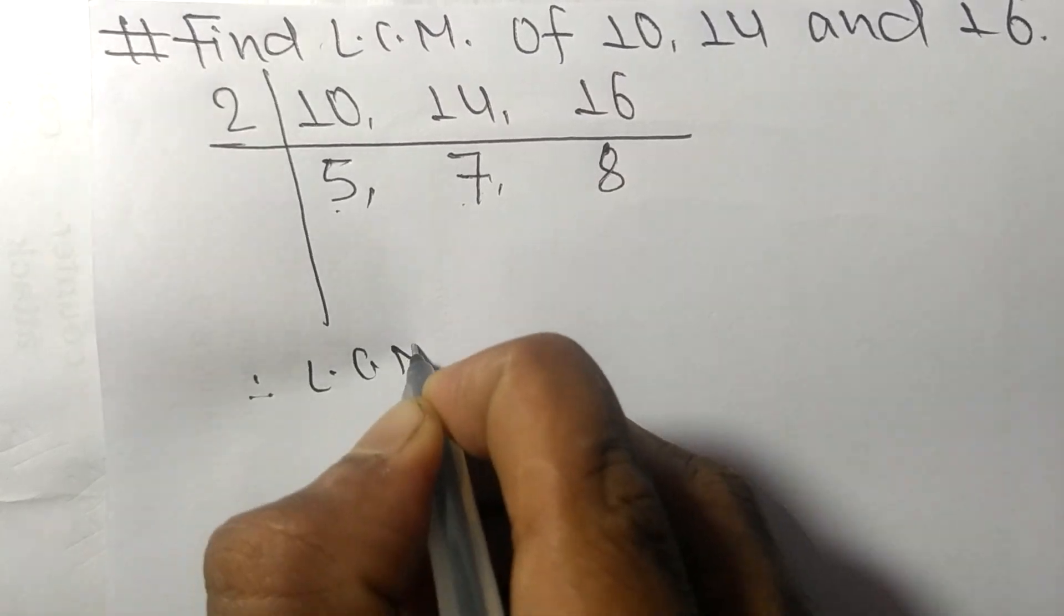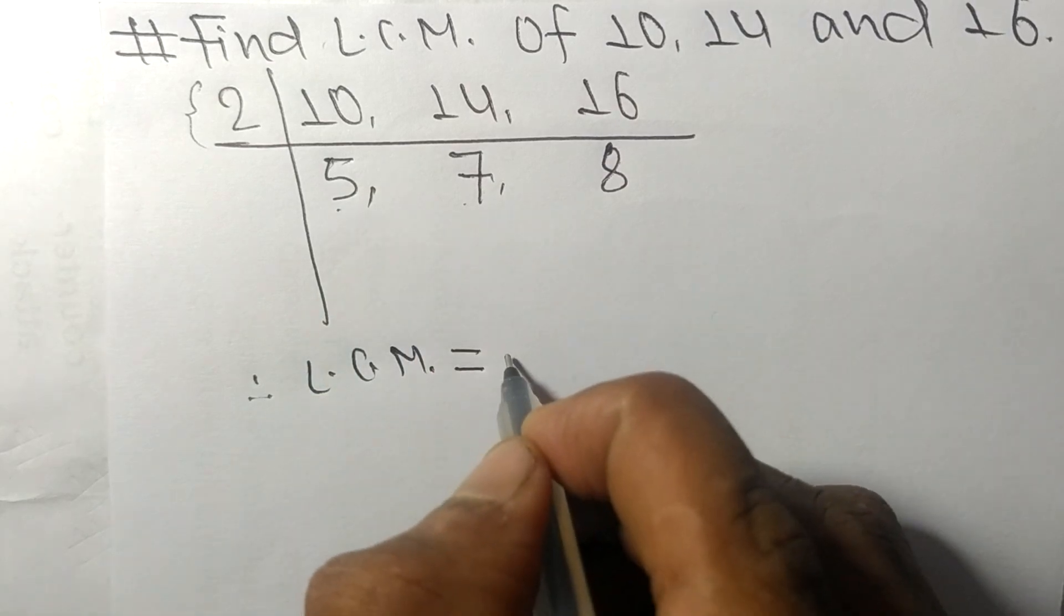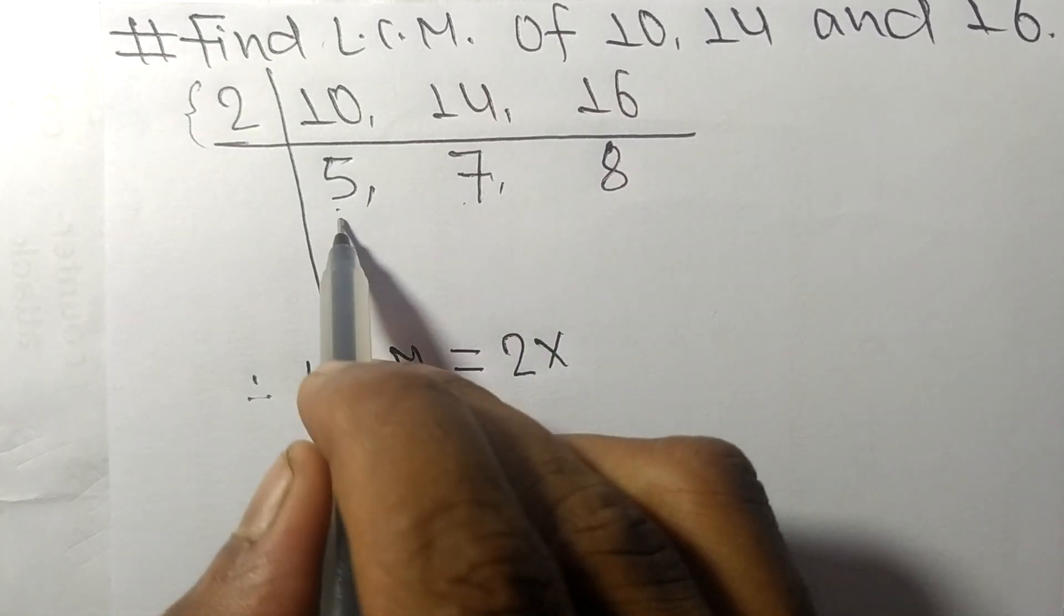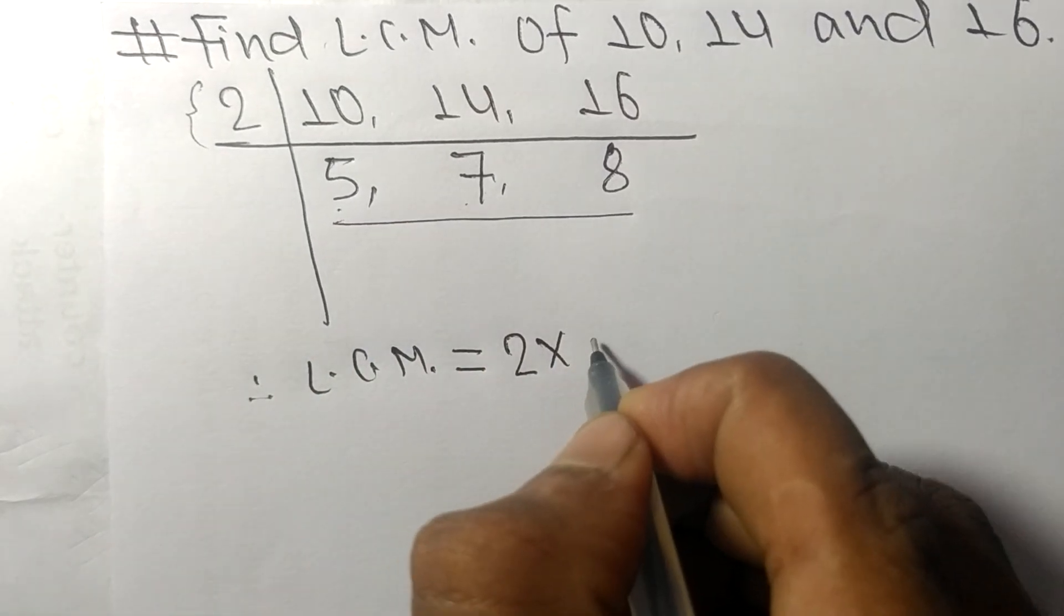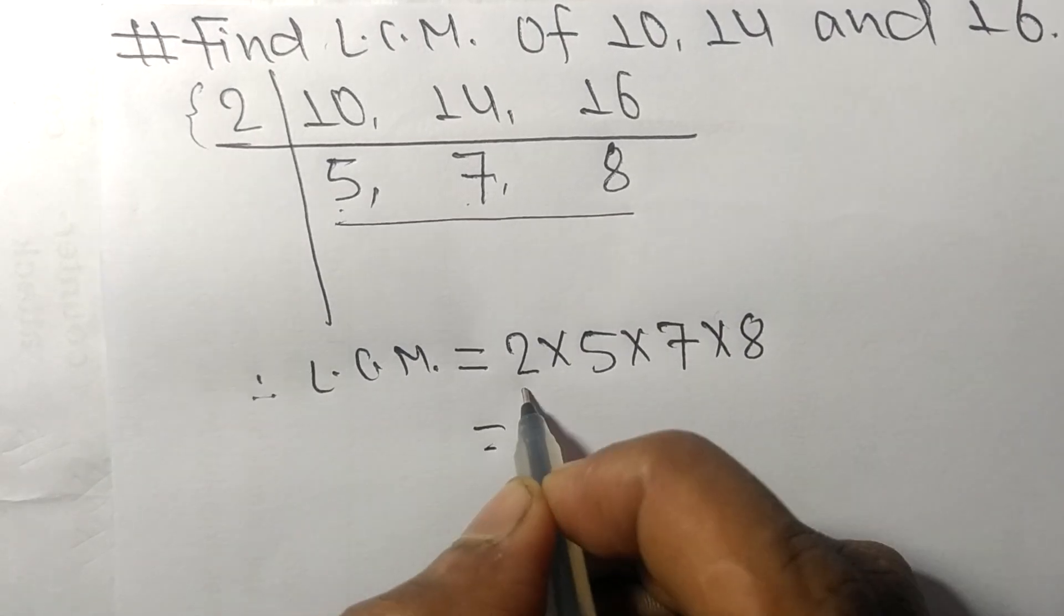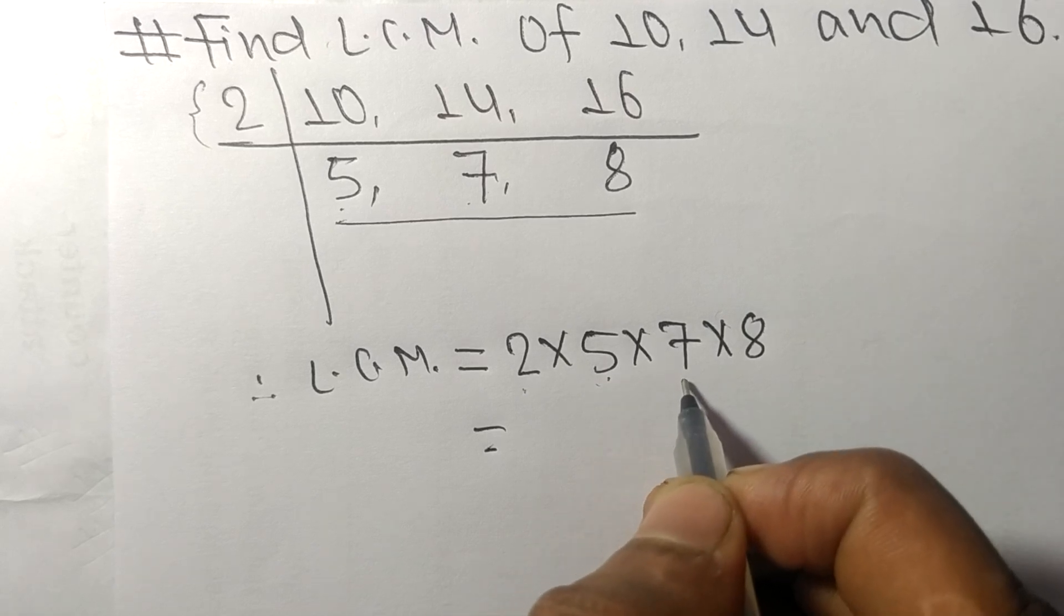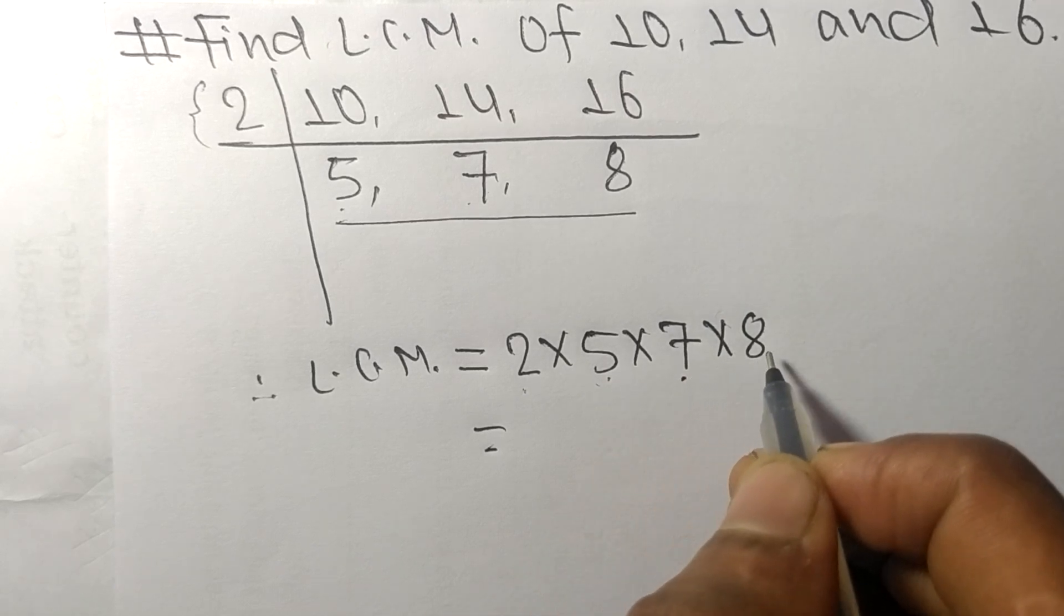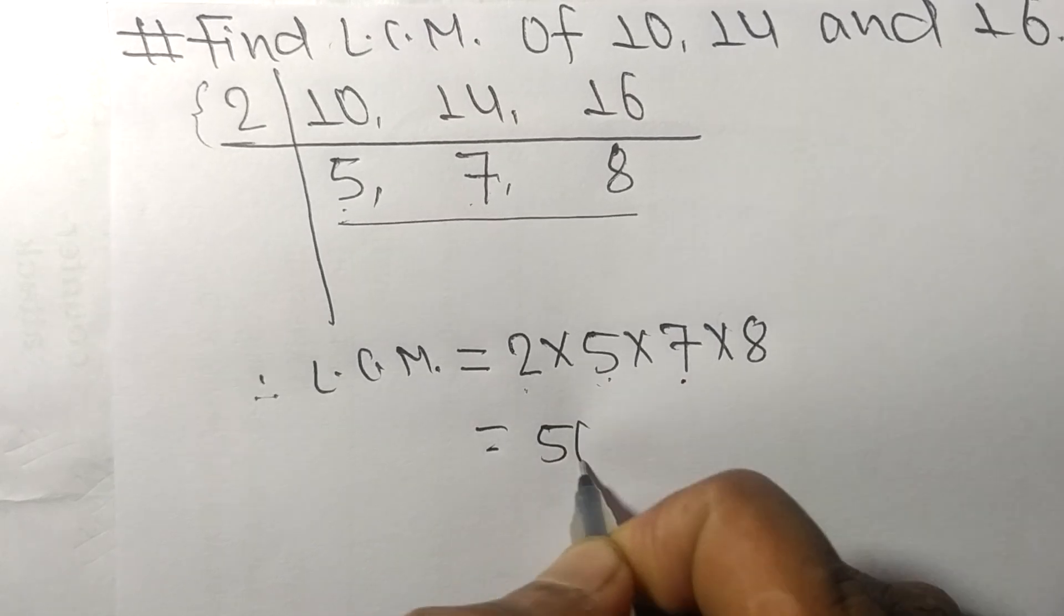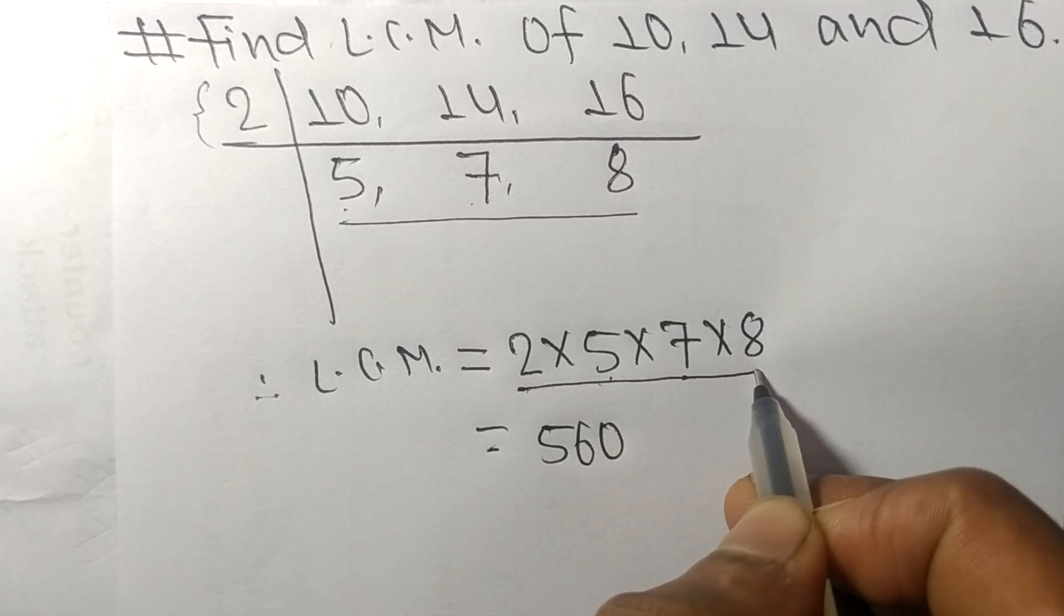Therefore its LCM is equal to 2 times 5 times 7 times 8. So 2 times 5 equals 10, 10 times 7 equals 70, 70 times 8 equals 560. By multiplying all these numbers we got 560.